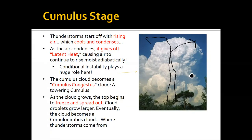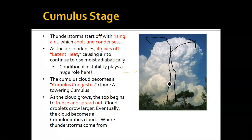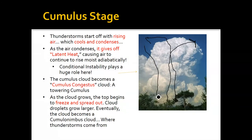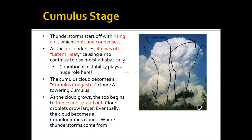I'll show you an image of a cumulonimbus cloud on the next slide. At this stage, you have a lot of warm rising air — we call that an updraft. As this air is rising up, it's pushing cooler air out of the way and forcing that cool air to sink to take its place. That sinking cool air is what's called a downdraft. Once that downdraft begins to form, the storm has transitioned from the cumulus stage into the mature stage.